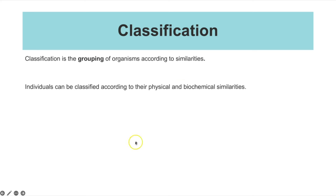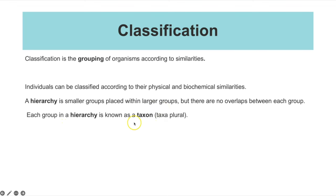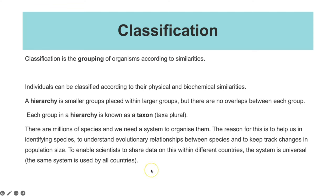Individuals can be classified according to their physical and biochemical similarities, and they're grouped in hierarchies. A hierarchy is when you have smaller groups placed within larger groups but there are no overlaps between those groups. In classification, each hierarchy is known as a taxon, or taxa for plural. There are millions of species and the reason we use classification is to have a system to organize them — to help identify species, understand evolutionary relationships, track changes in population size, and enable scientists to share data universally.